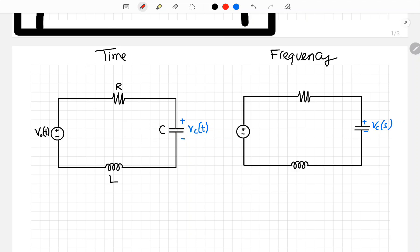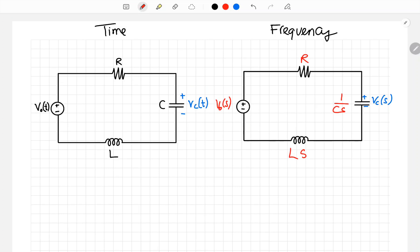If you took circuit, MAE-60 or ECS-70A, then you probably know how to convert these into impedance in frequency domain. V0 of T becomes V0 of S. R stays the same. Capacitor C becomes 1 over C times S. And finally inductor L becomes L times S. Again, the input is V0 of S and output is Vc of S.